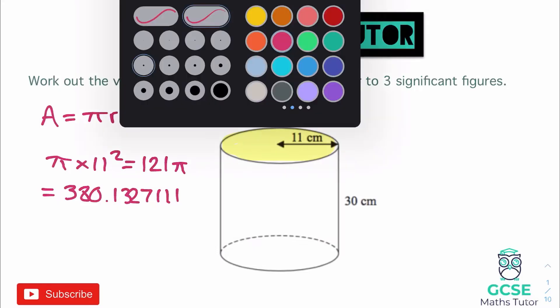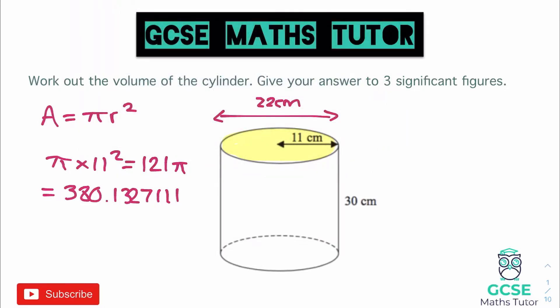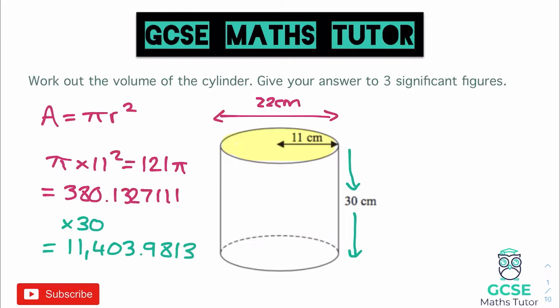Now in order to work out the volume — just like we did on 3D prisms — we are going to multiply the cross-sectional area by how far that face goes through the shape. In this case, that is the height of the cylinder, which is 30 centimetres. So we take the area and multiply it by 30, and if we do that on the calculator we get 11,403.98133.